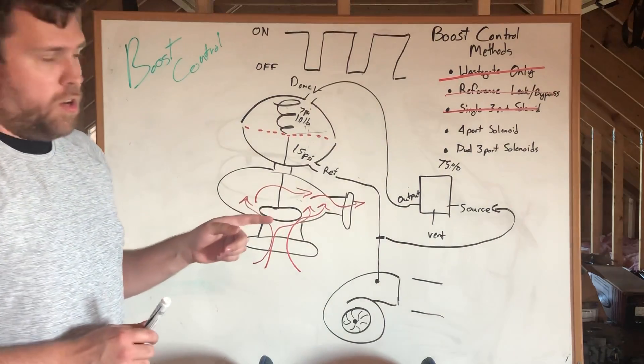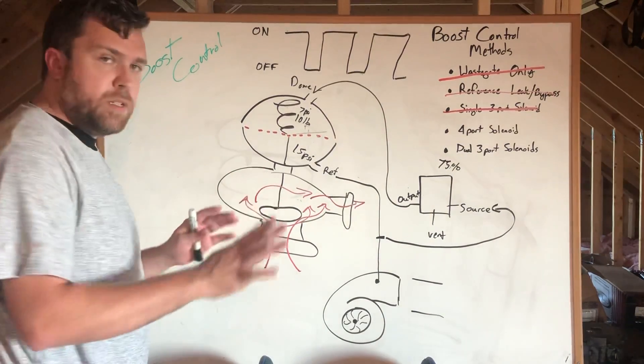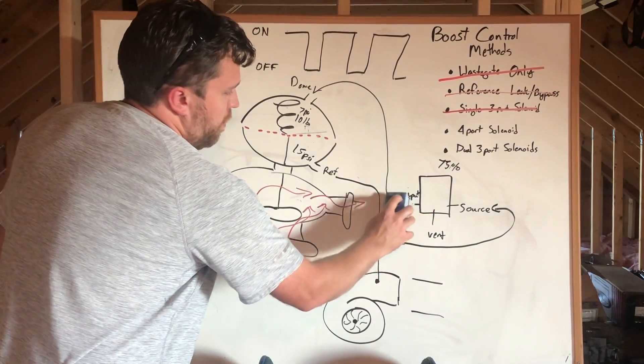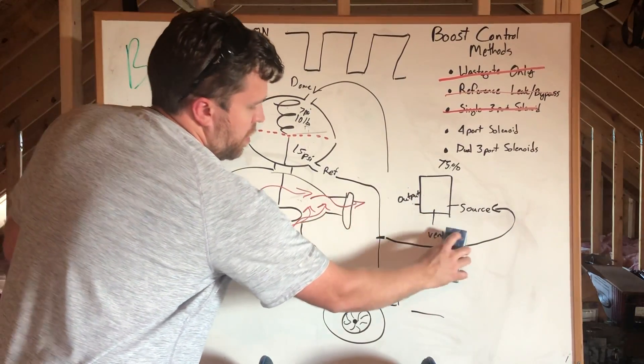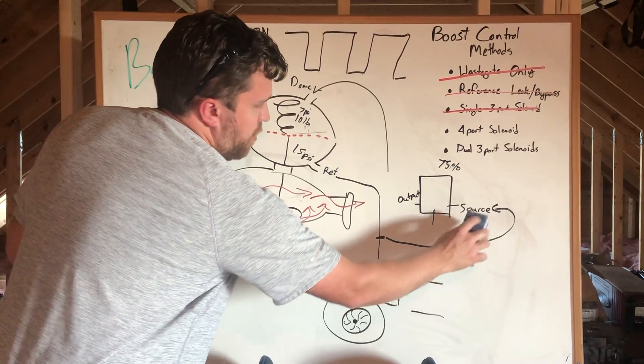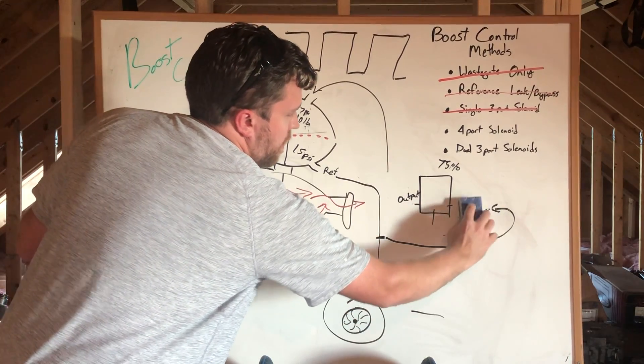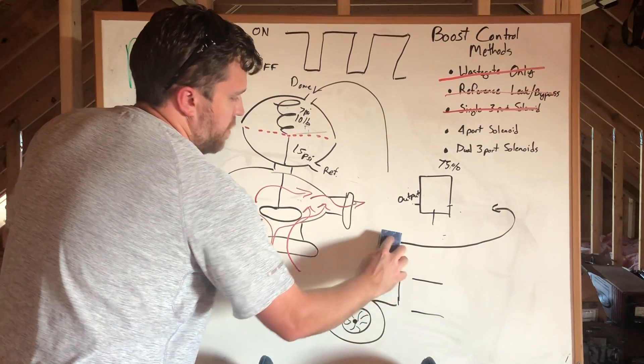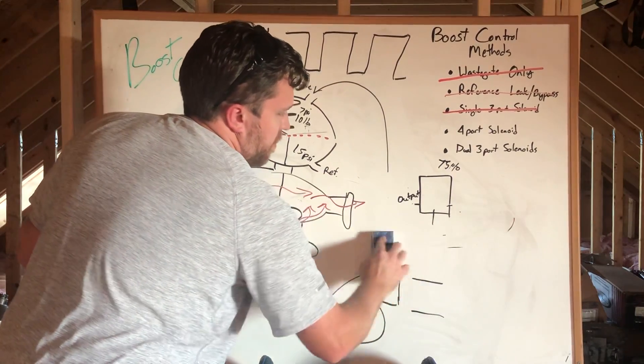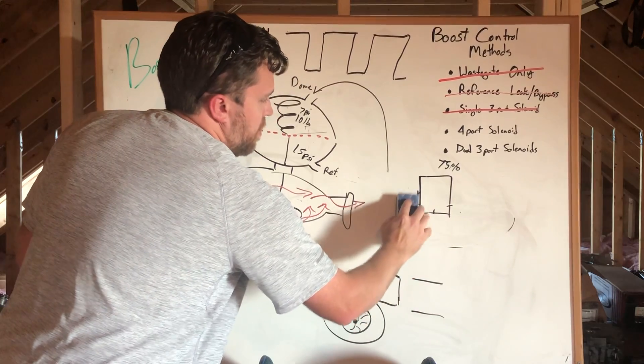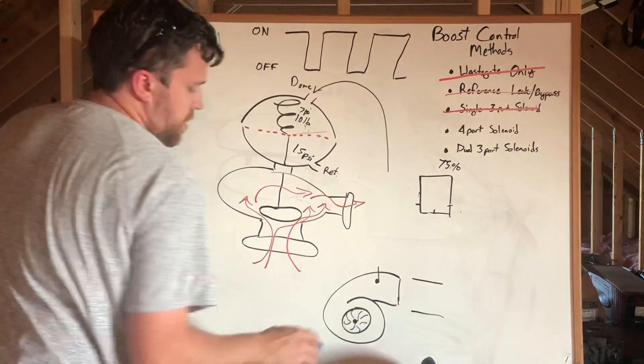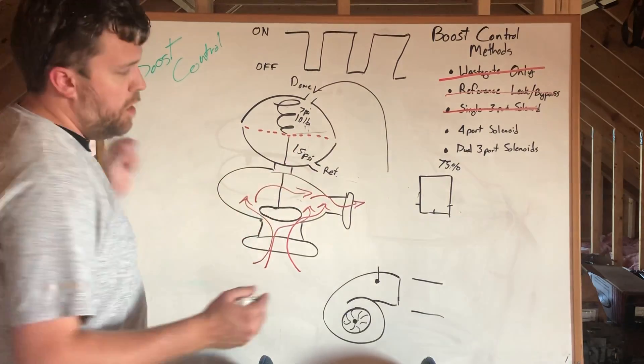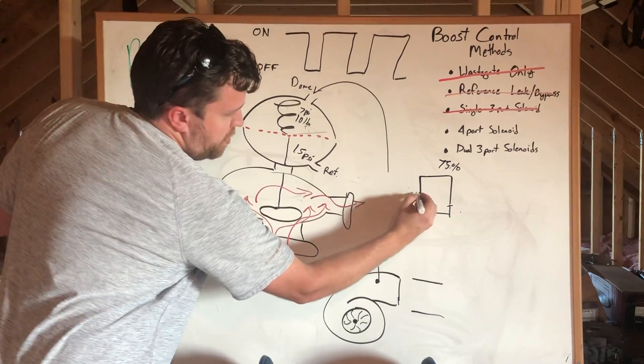I'm going to do some erasing here. I'm going to remove that output, remove that vent and source, and take the reference line off. The reason I just erased all that is because, as the name implies, a four-port has got four ports on it.